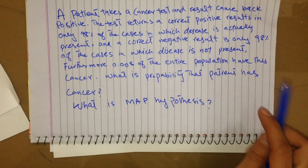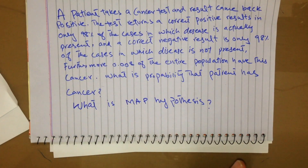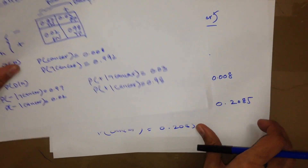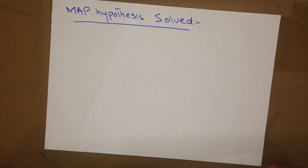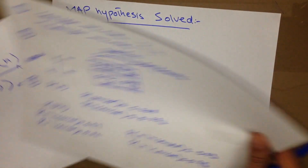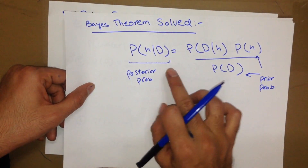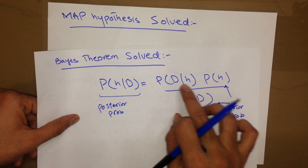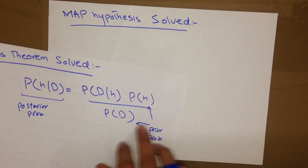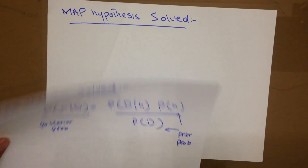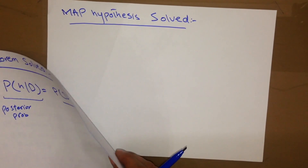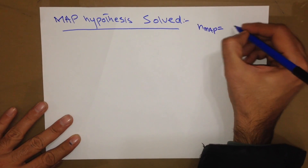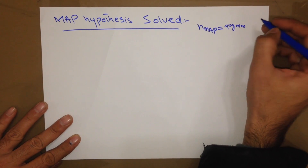That was calculated for a normal Bayesian theorem problem. Extending to this, sometimes we need to calculate the MAP hypothesis. MAP hypothesis works almost the same way — in fact it is a bit easier to find. Using the Bayesian theorem formula, in order to find out MAP hypothesis we only need P(D|H) and P(H). We don't always need to calculate P(D).